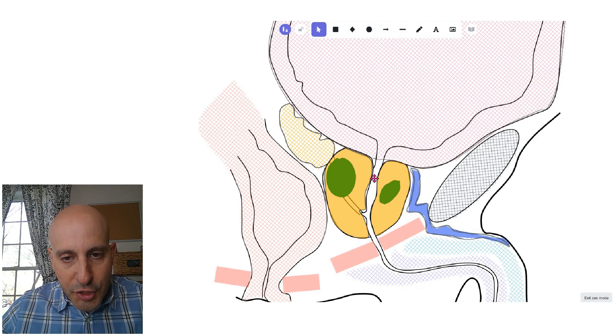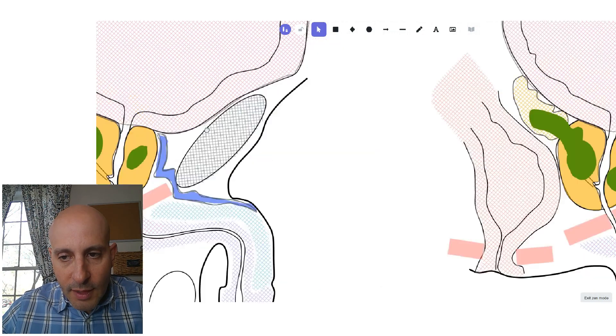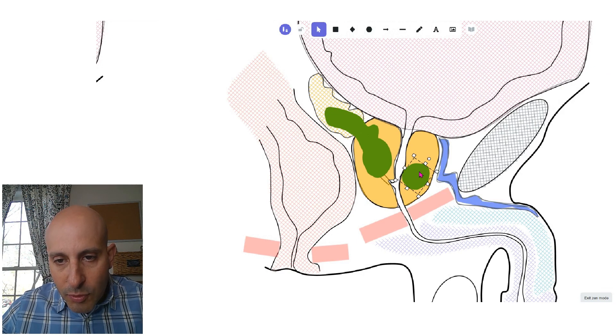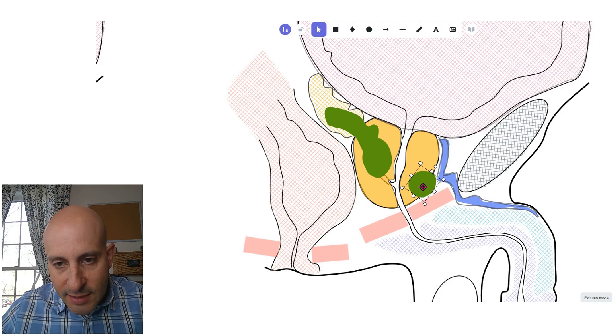This is called stage two. If the cancer is bulging outside the surface of the prostate, that's all it takes to be considered stage three. Contained, bulging, or stage three.